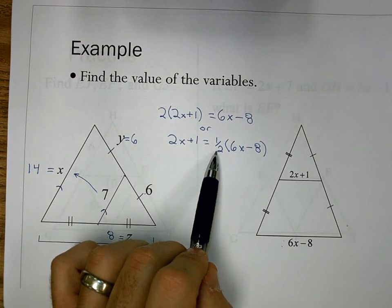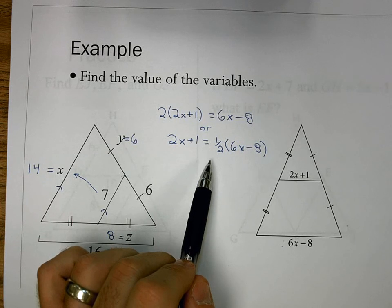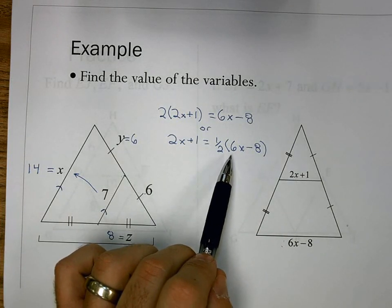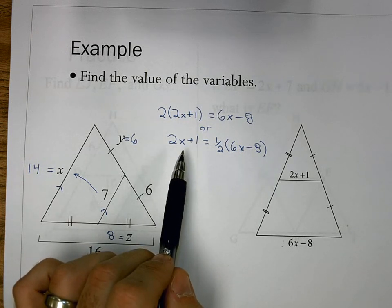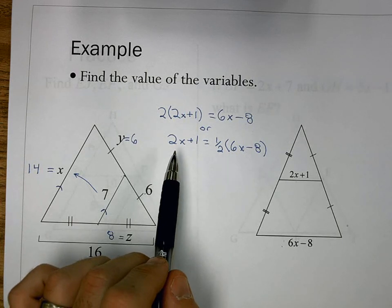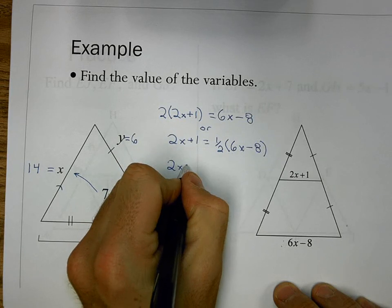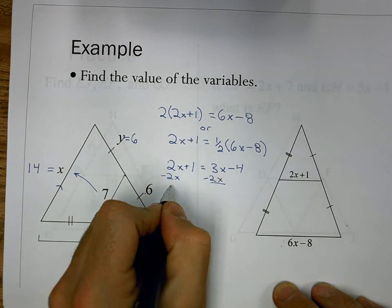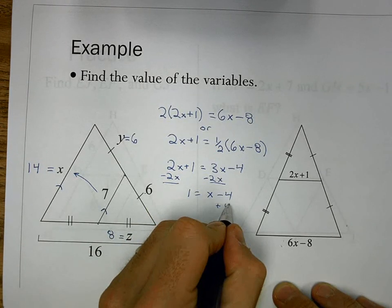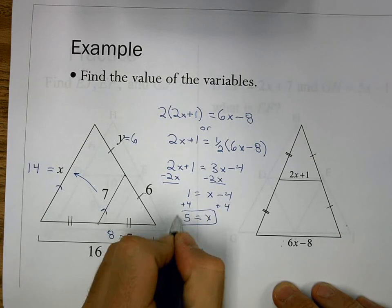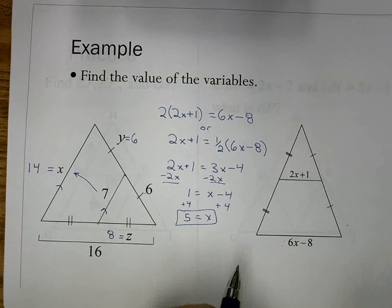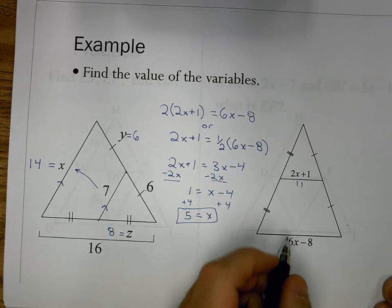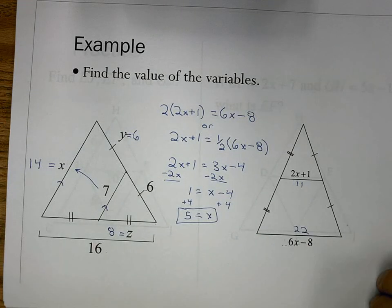A key thing to look for: if I'm taking half of something, it's nicer when both terms are even. I generally use the half form when they're both even; if there are odd numbers, I'd rather avoid decimals or fractions. So let's use the doubled form: 2 times (2X plus 1) equals 6X minus 8, which gives 4X plus 2 equals 6X minus 8. Wait — let's use the halved form: 2X plus 1 equals 3X minus 4. Subtract 2X from both sides: 1 equals X minus 4. Add 4 to both sides: X equals 5. Checking: 2(5) plus 1 equals 11, and 6(5) minus 8 equals 22. Since 11 is half of 22, the values match.